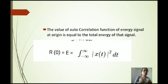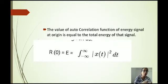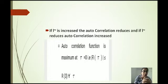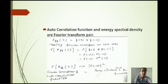The second property is that the value of the autocorrelation function of an energy signal at the origin equals the total energy of that signal. So if you put tau equal to zero you get the energy of the signal: R(0) equals the integral from minus infinity to infinity of |x(t)|² dt. The third property is that as tau increases the autocorrelation reduces, meaning the autocorrelation function is maximum at tau equal to zero.